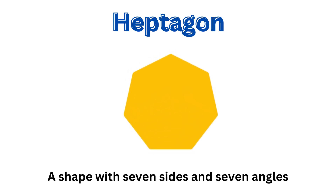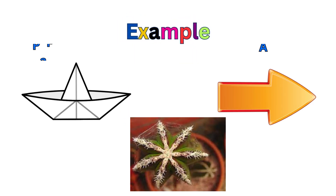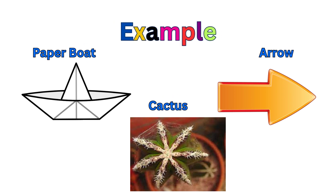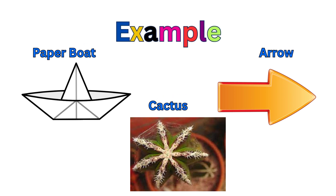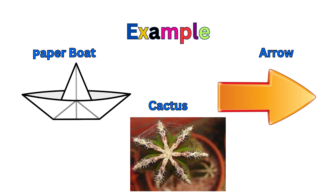This shape is a heptagon — a shape with 7 sides and 7 angles. The examples are a paper boat, a cactus, and an arrow.